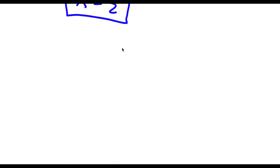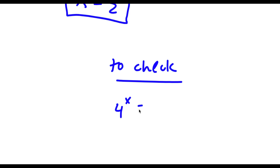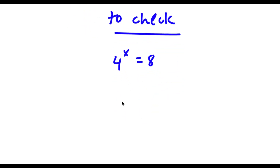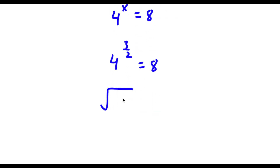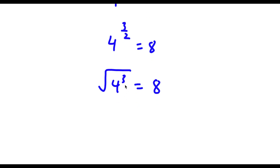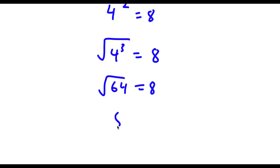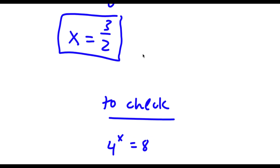Now to check: 4 to the power of x equals 8, and we know x equals 3 over 2. So I have 4 to the power of 3 over 2, which is the same as the square root of 4 to the power of 3. 4 to the power of 3 is 64, so I have the square root of 64 equals 8, and the square root of 64 is 8. So 8 equals 8 — my solution is correct.